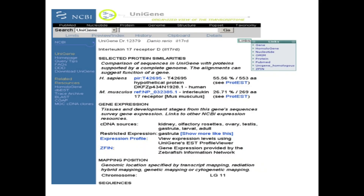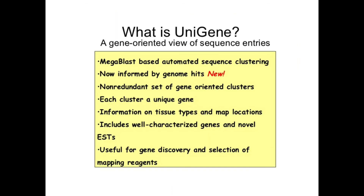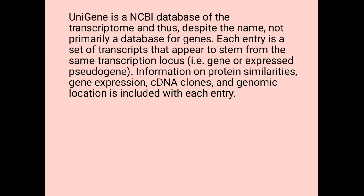The next one is UniGene. The UniGene structure provides information on tissue types and map locations. It includes well-characterized genes and novel ESTs, and is useful for gene discovery and selection of mapping reagents, using Megablast-based automated sequence clustering. UniGene is the NCBI database of the transcriptome and, despite the name, is not primarily a database for genes. Each entry is a set of transcripts that appear to stem from the same transcription locus, i.e., a gene or expressed pseudogene.